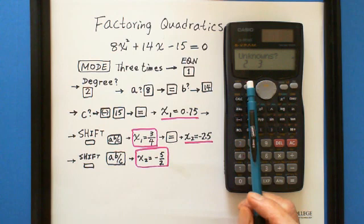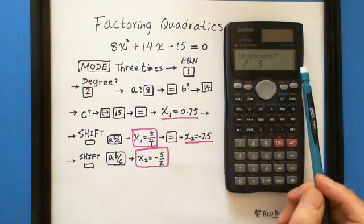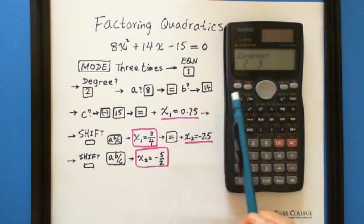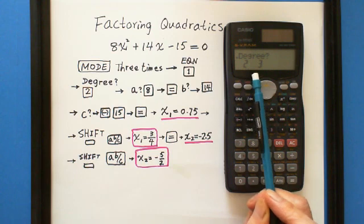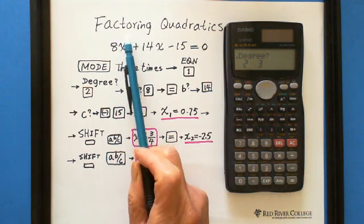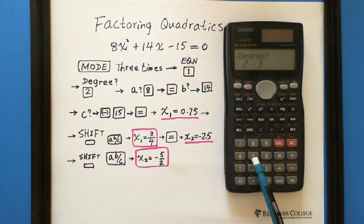Equation mode asks for 1 unknown, 2 unknown, or 3 unknown. This is 1 unknown, so we go to the left side arrow. It asks for degree 2 or 3. Because the highest exponent is 2, it's 2 degrees. We hit 2.